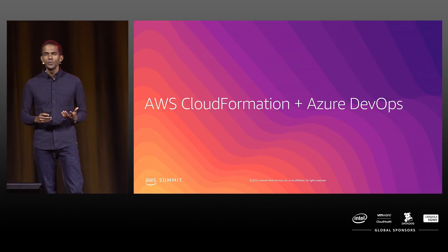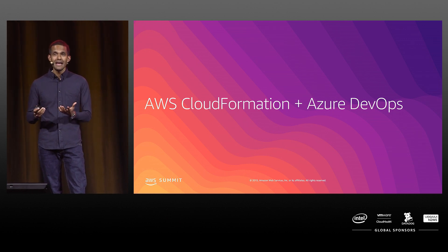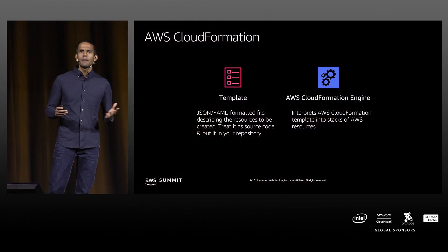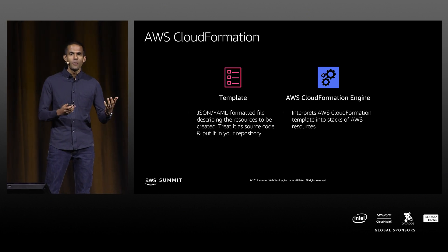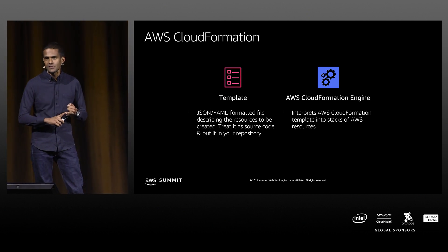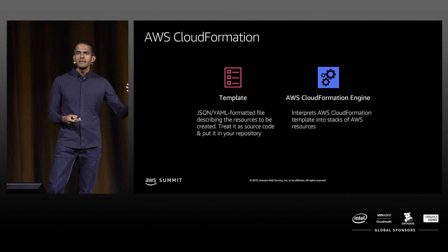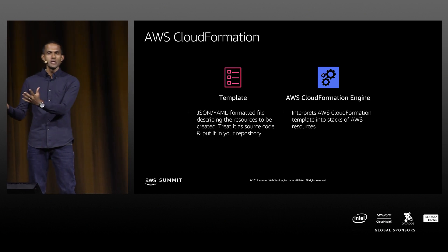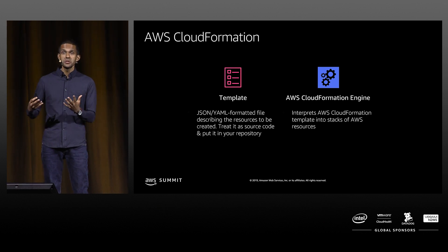In the first demo, let's go through how you can do an integration with AWS CloudFormation with Azure DevOps and manage your infrastructure as code. AWS CloudFormation is a JSON or YAML formatted document where you can specify the databases, EC2 instances, or auto-scaling that you want as code. Once you write all the resources you want on AWS as code, you hand it into the AWS CloudFormation engine, which reads, understands, and orchestrates it on your behalf.